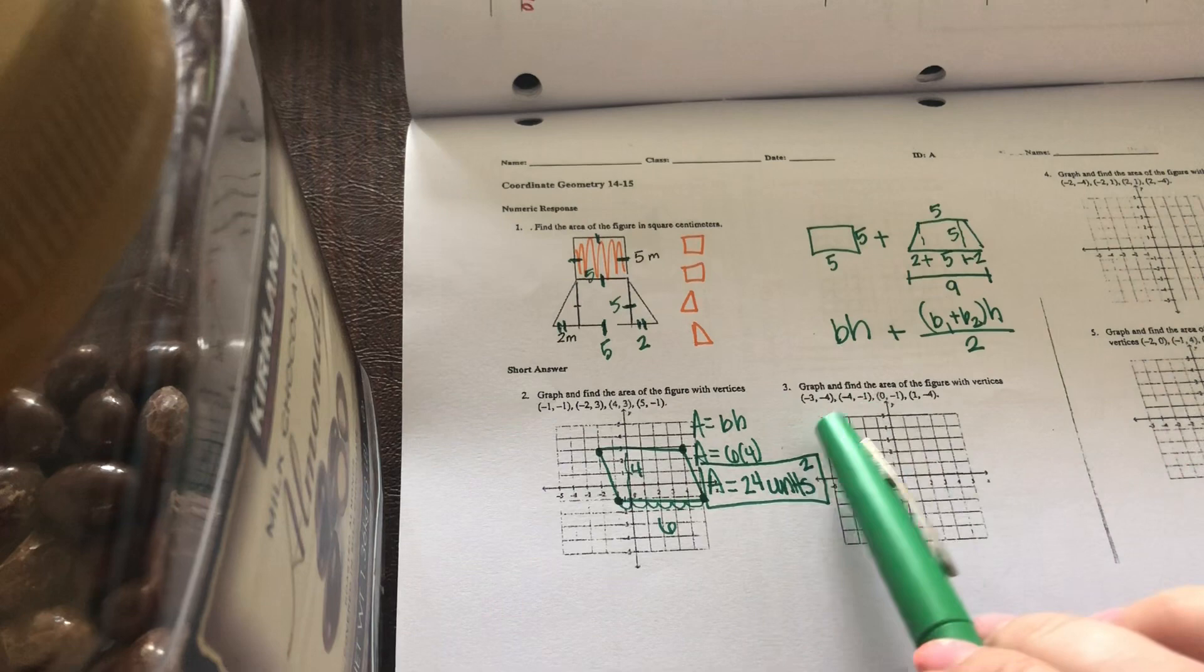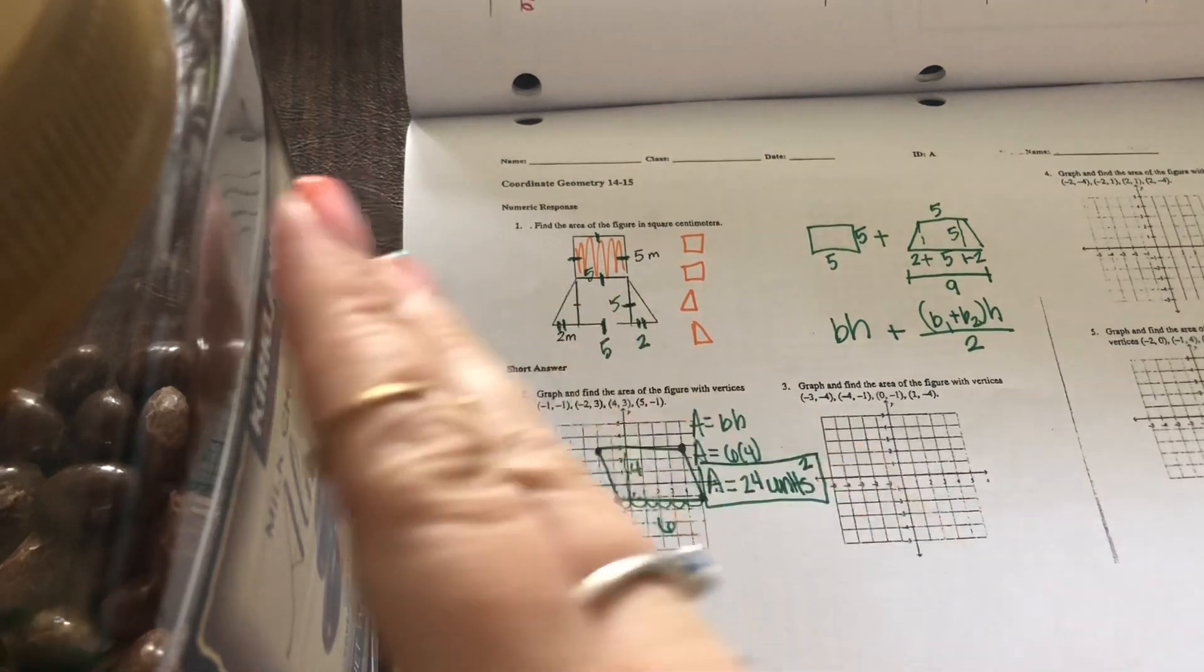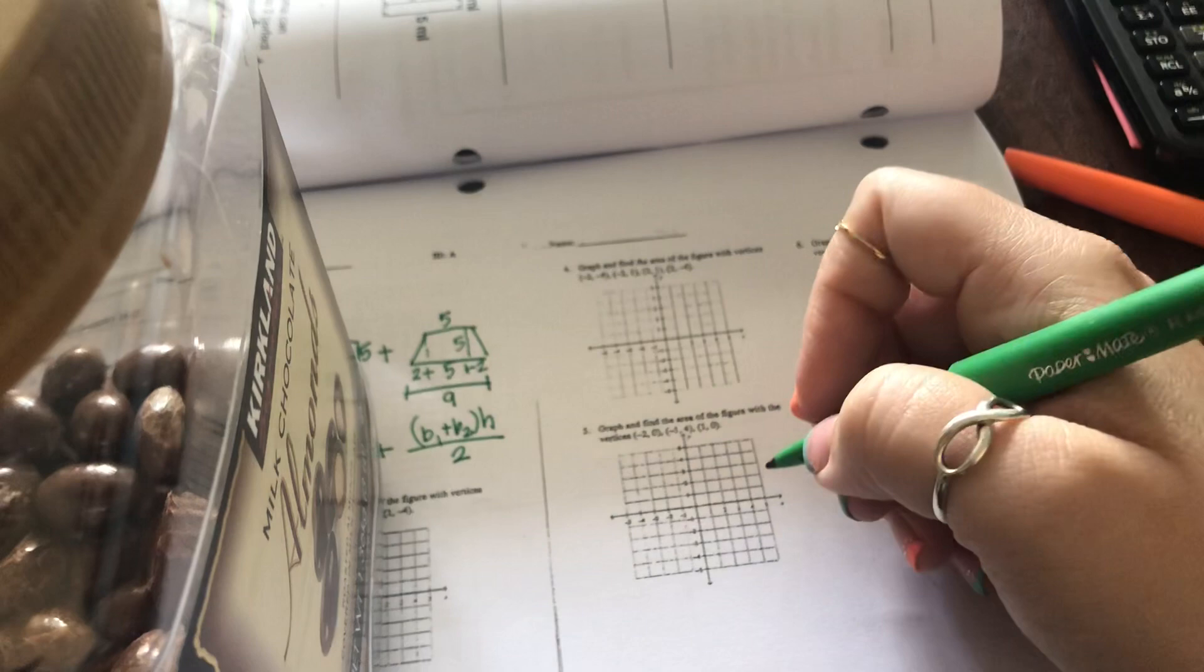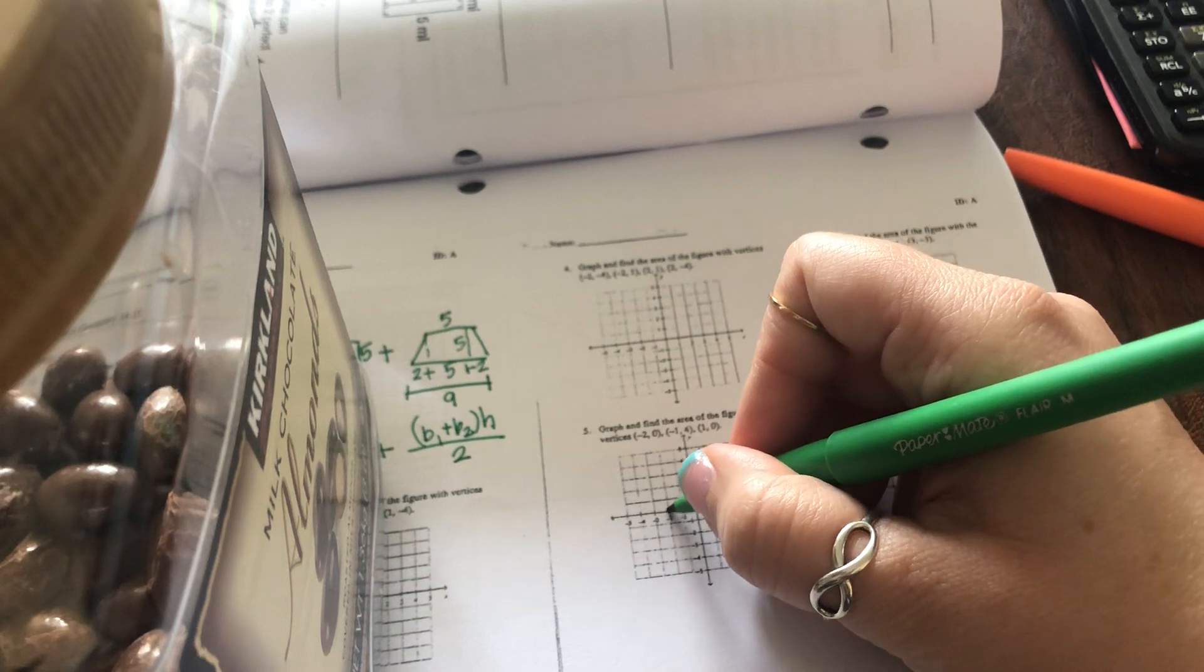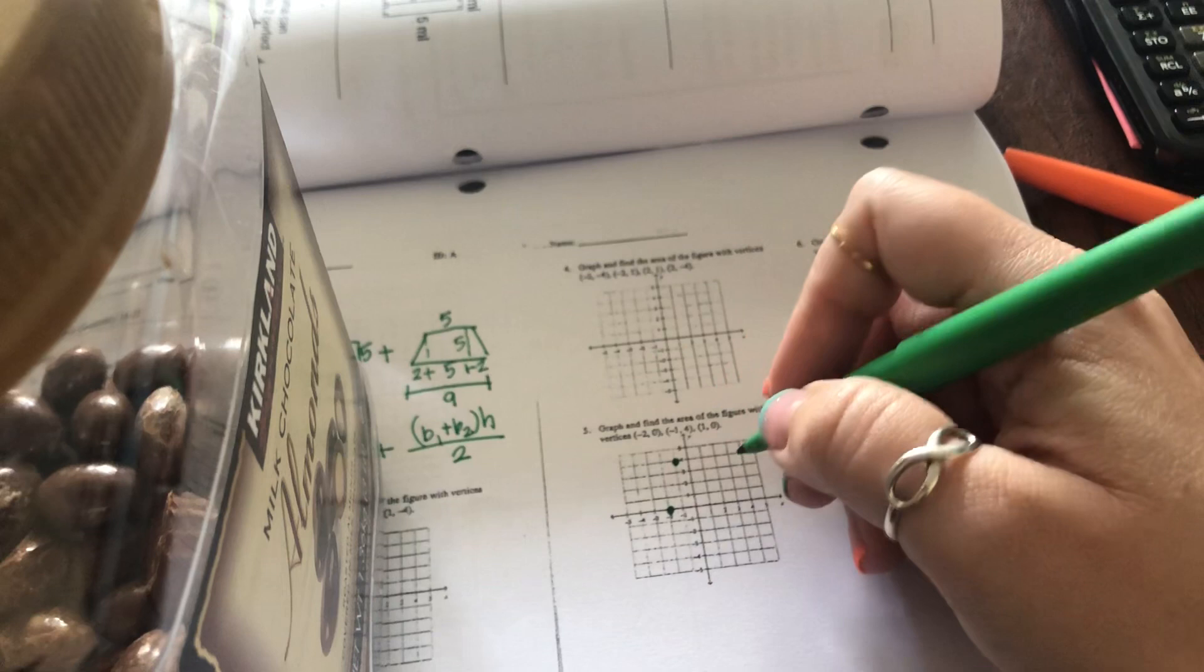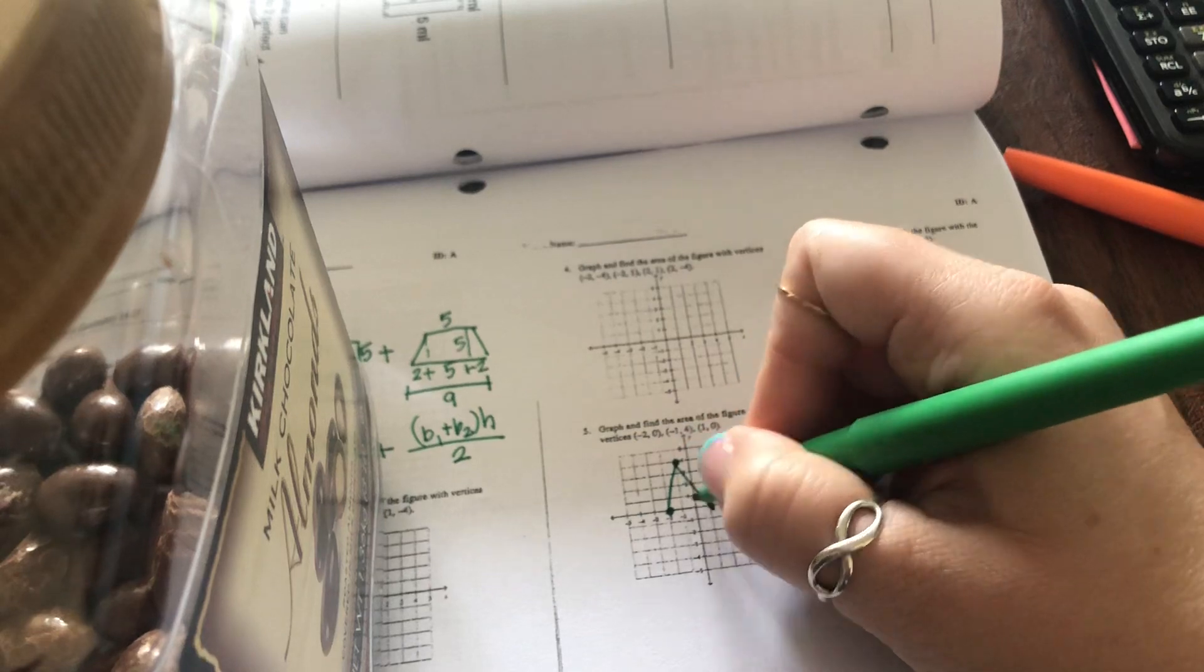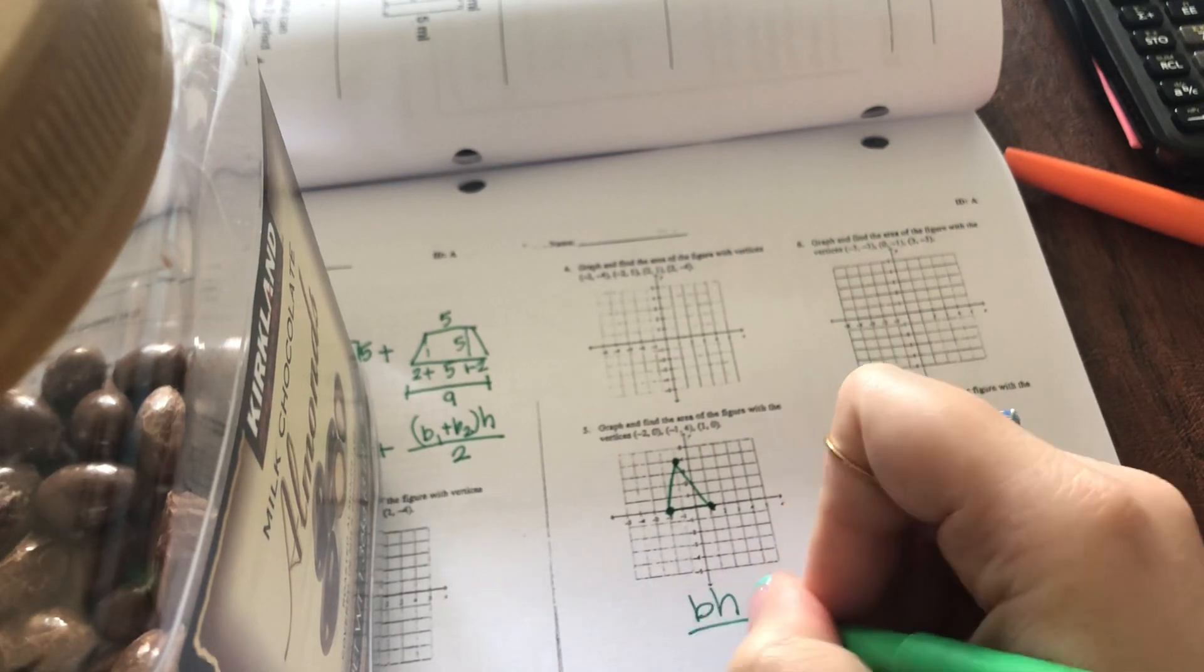This next shape, it's four dots. So it's going to make another parallelogram. Same with number four, but let's take a look at number five. It only has three coordinate points, which means it's going to make a triangle. So if I go ahead and plot those points, so start at your origin, you're going to go left two and up nothing. So it just stays there. And then left one and up one, two, three, four. And then their final point is over one, up nothing. Connect those three points and you have a triangle.